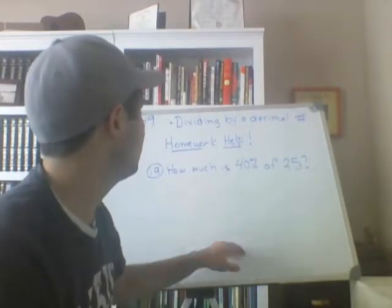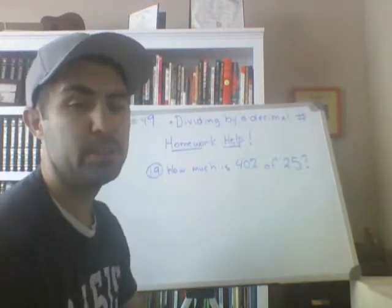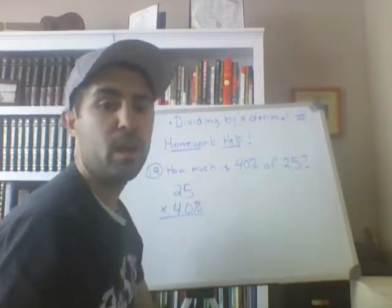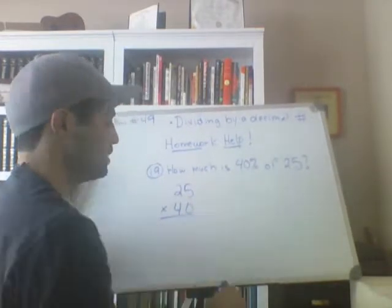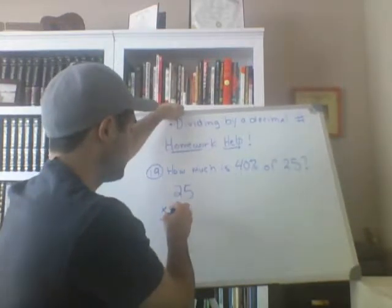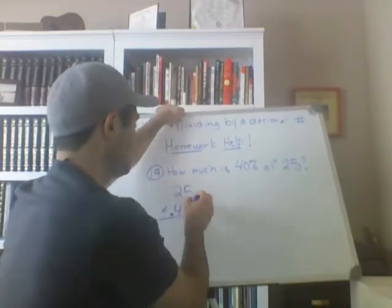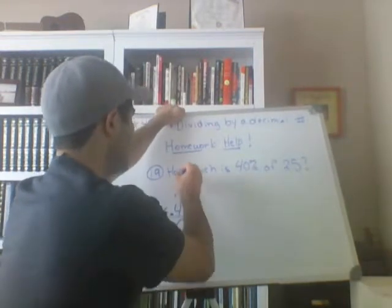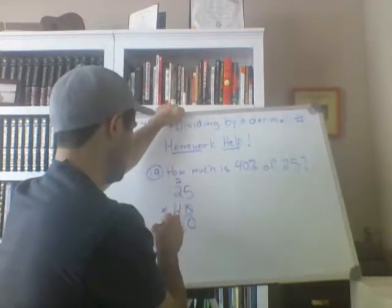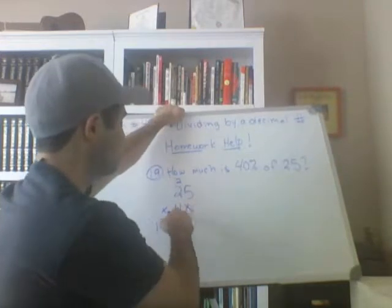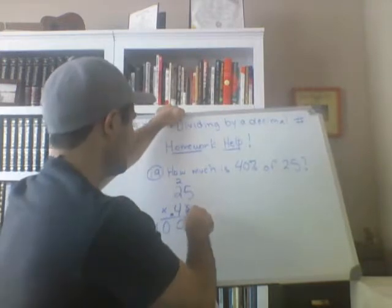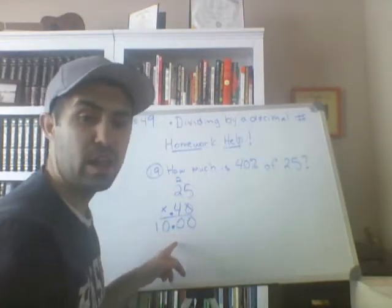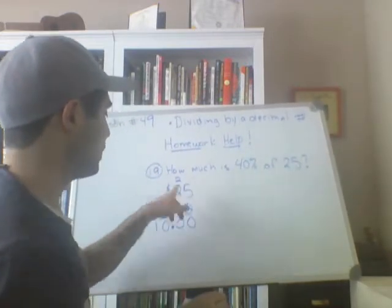Number 19: how much is 40% of 25? We know that "of" means multiply, so I'm going to take 25 and find 40% of that number. First step: take the percent sign, erase it, and since I'm changing a percent to a decimal, take the point and move it two places to the left. So this is really 0.40 times 25. Zero times 5 is zero — I can just put a placeholder of zero. 4 times 5 is 20, carry the 2. 4 times 2 is 8, plus 2 is 10. Since the decimal point has been moved two places to the left on top of the problem, I need to move it two places to the left on the bottom. So the answer is 10 — 40% of 25 is 10.